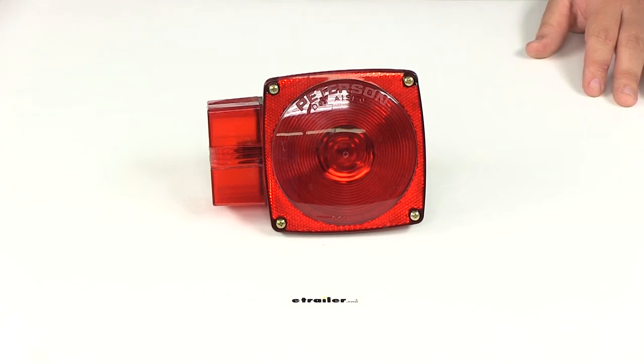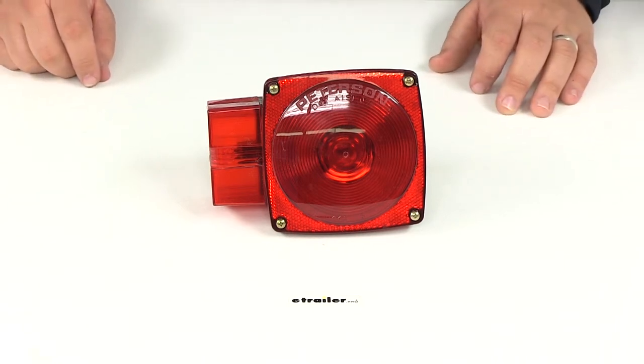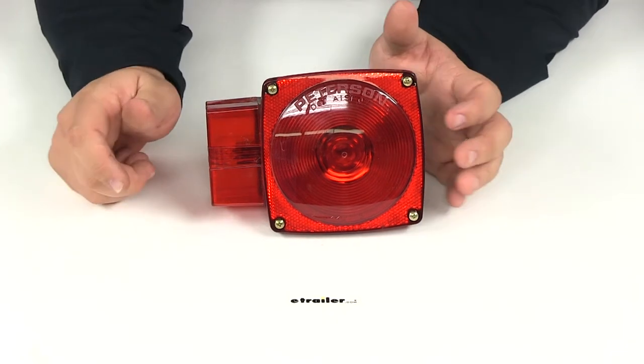Today we're going to be reviewing part number PM444L. This is the Peterson trailer light for the left-hand side of your trailer.